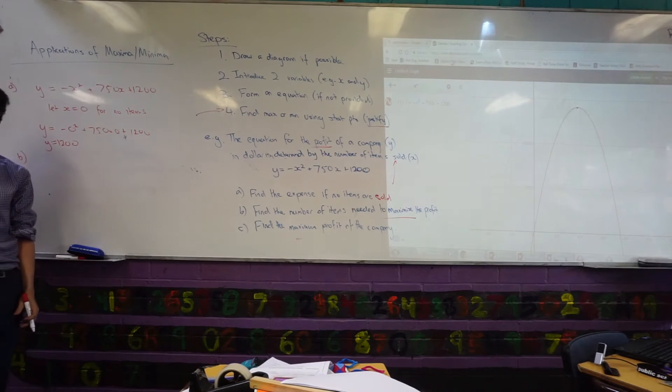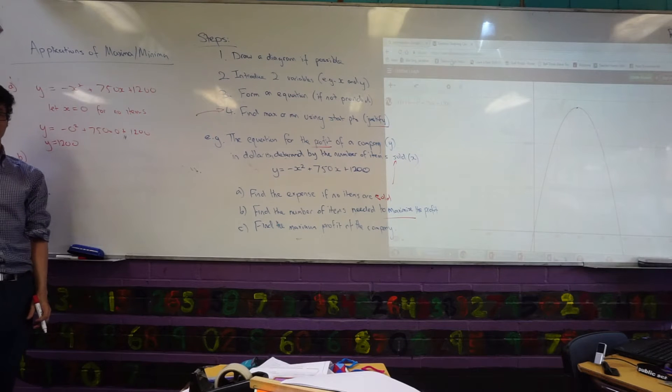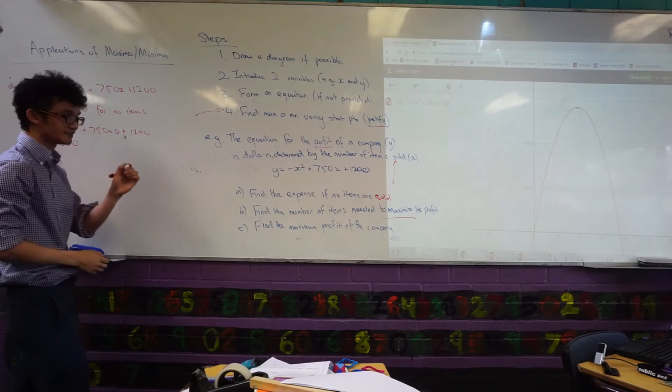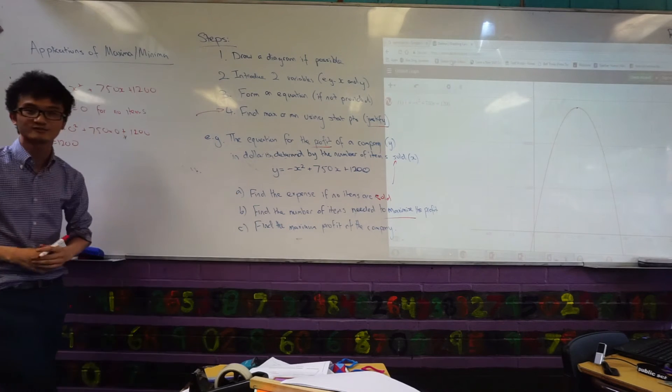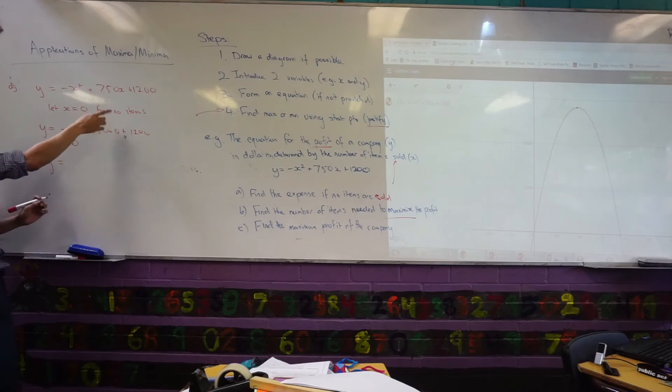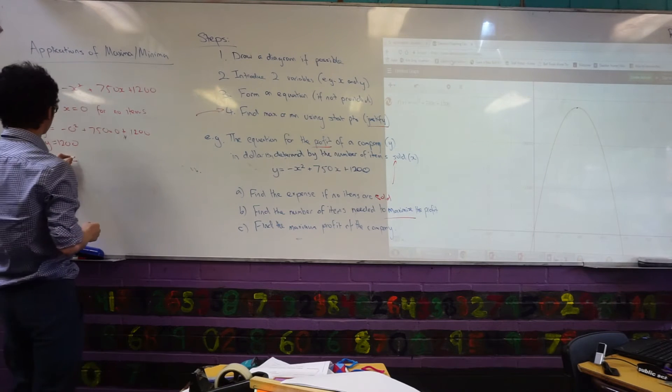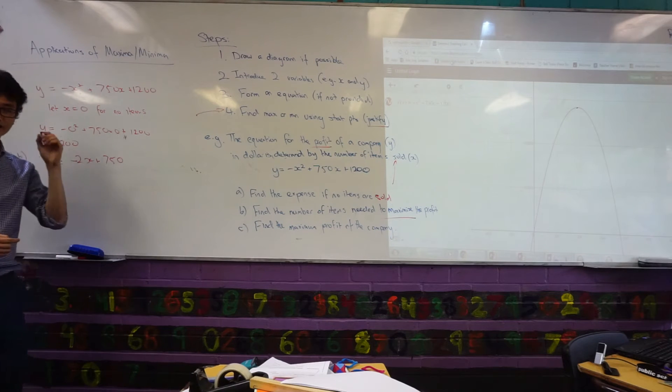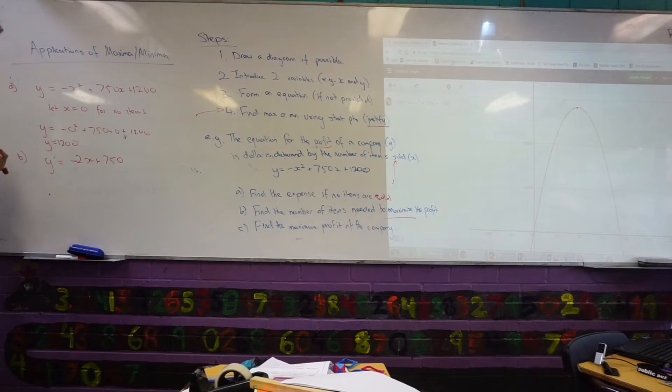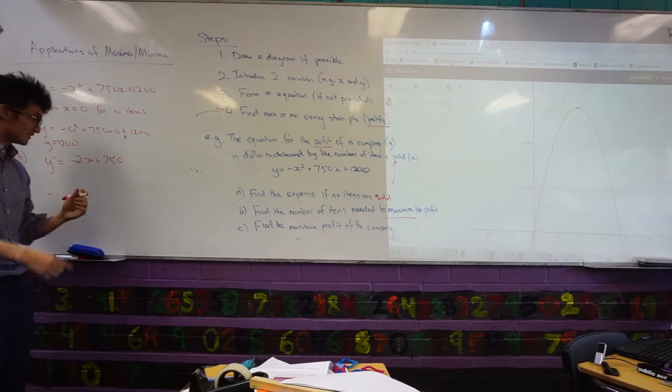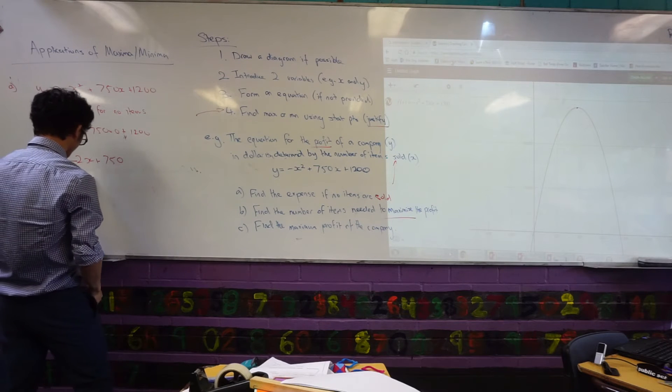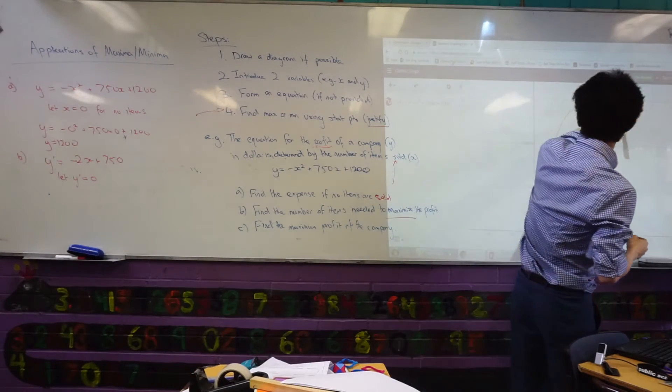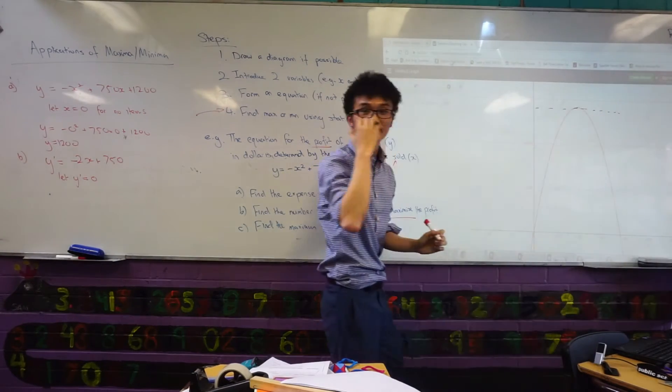Anytime in calculus when we look at maximum, what is the first step we've always done? Derivative. Yeah. We found the first derivative. The first derivative allows me to find stationary points. And then from there, I can find any maximum or minimums. So, y dash, I can use my normal rules of calculus. I've got negative 2x plus 750. But, for the maximum, I need to have a certain condition. What's that? Or for a stationary point. Let y dash, my first derivative, equal to zero. Because remember, my gradient needs to be zero. Yeah, horizontal.